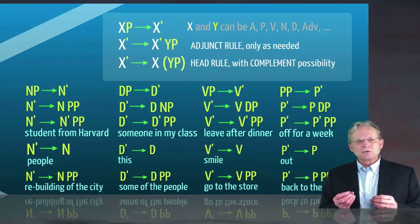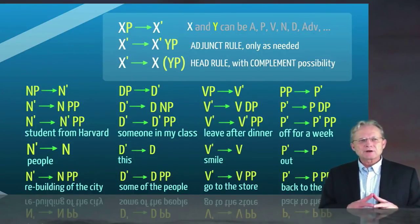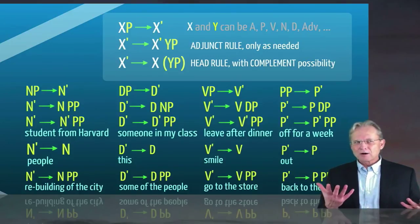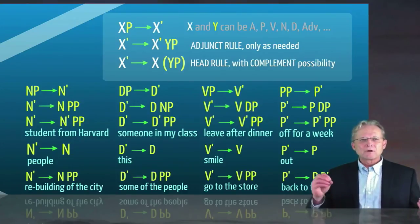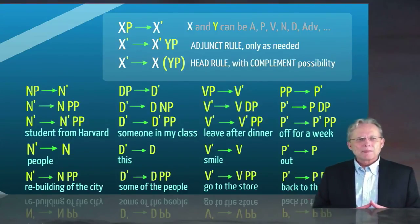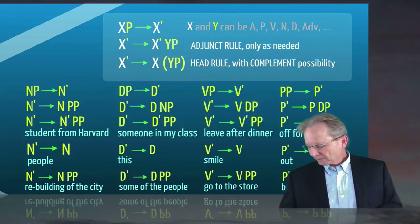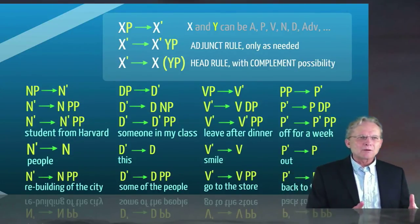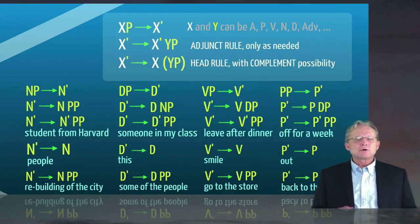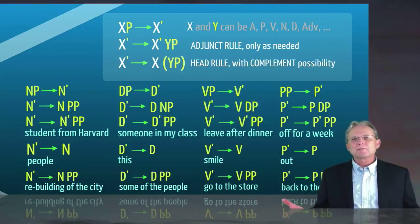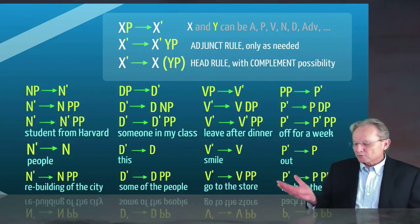There's an adjunct rule that allows you to add adjuncts by expanding an X bar, that is an N bar, P bar, D bar, or whatever, into another X bar, followed by a phrase. Or you can expand an X bar, and must at some level, into the head. And when you put the head in, you can also put a complement, if there is one, or if you want there to be one.